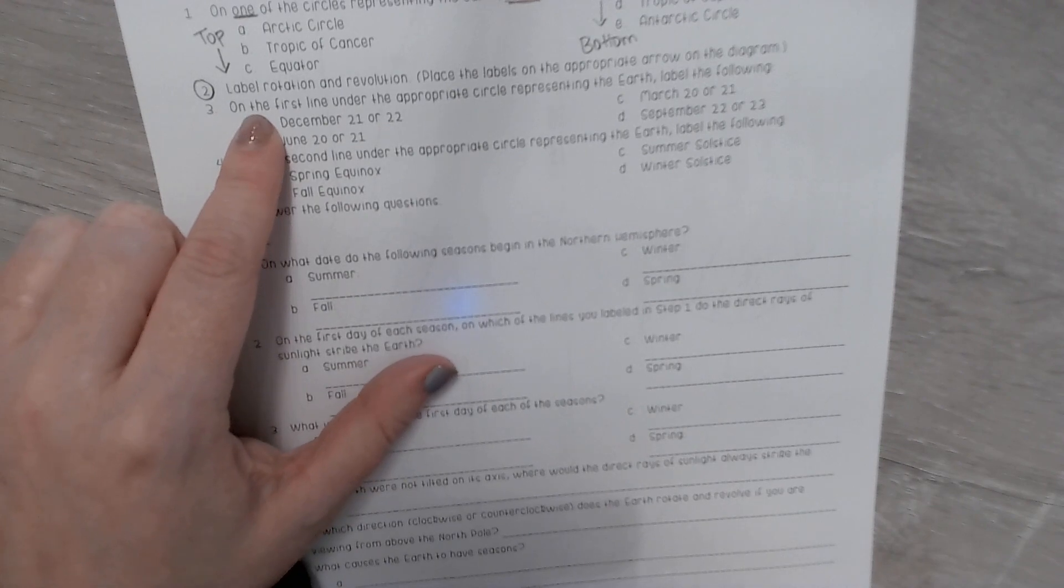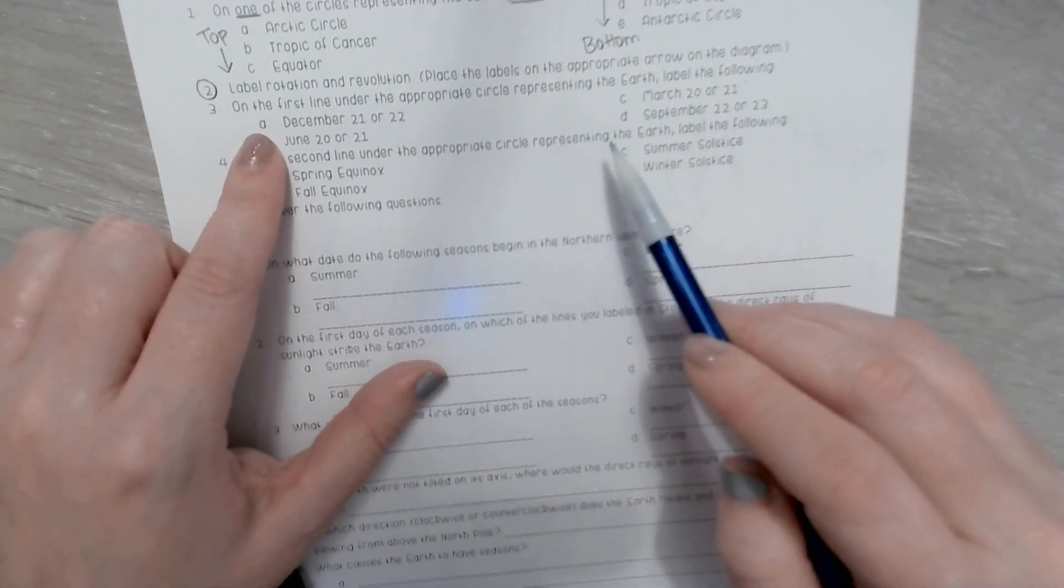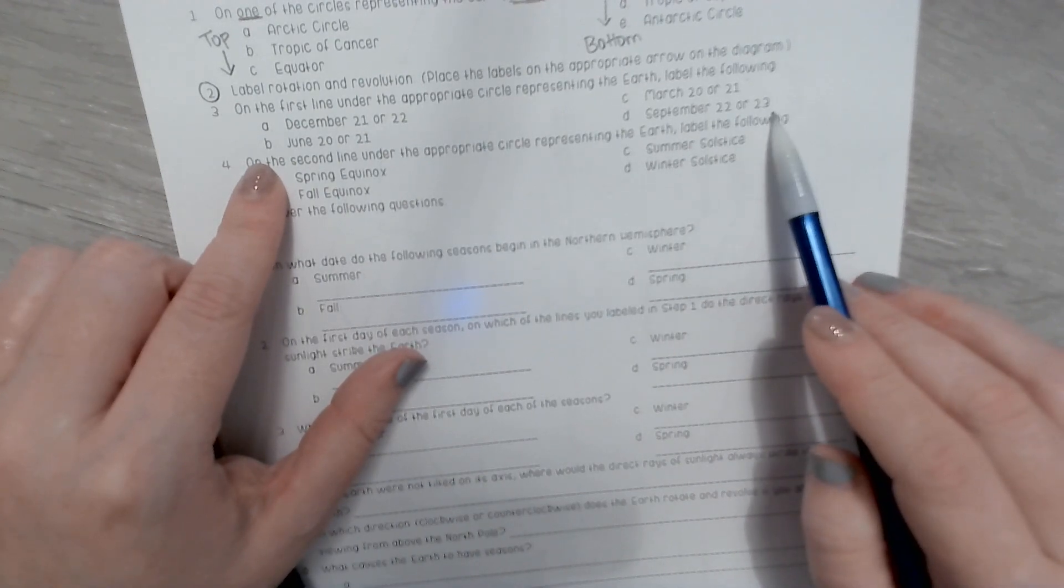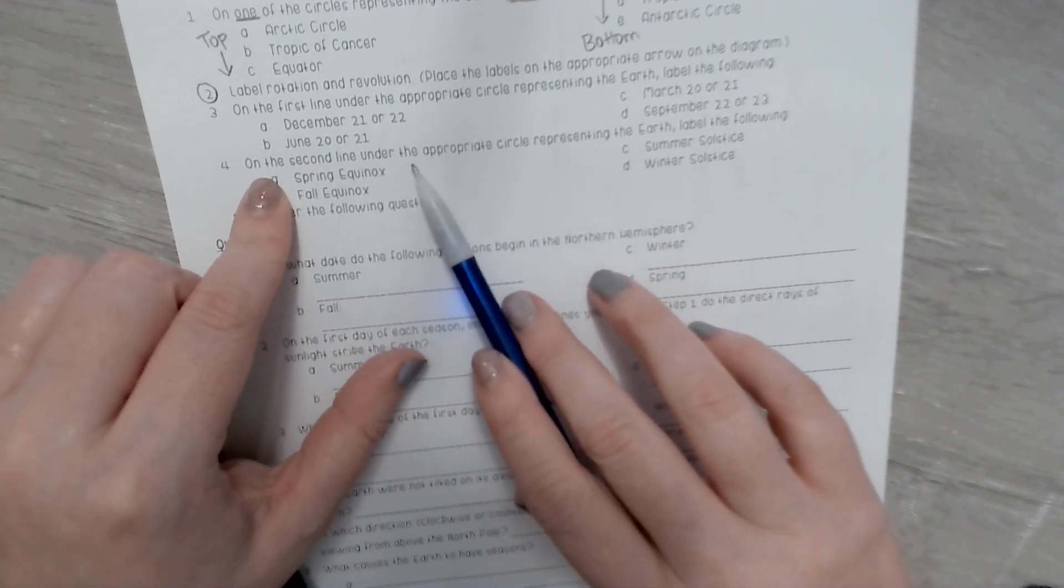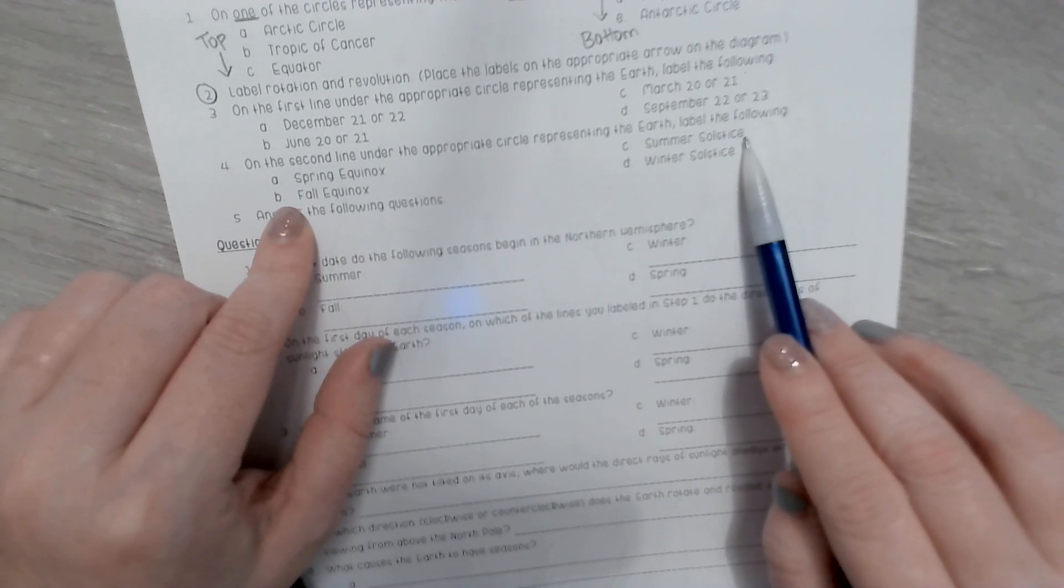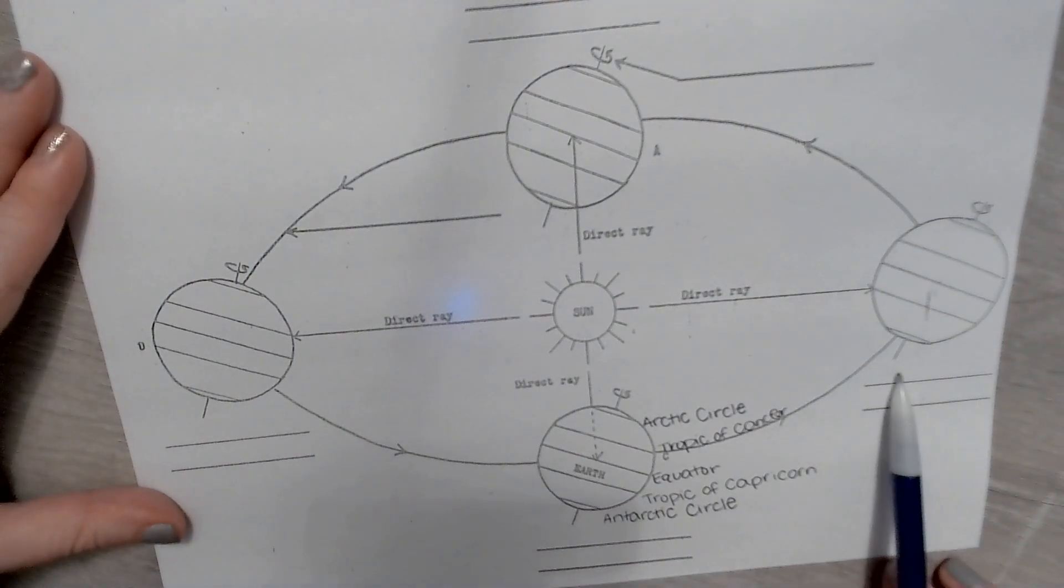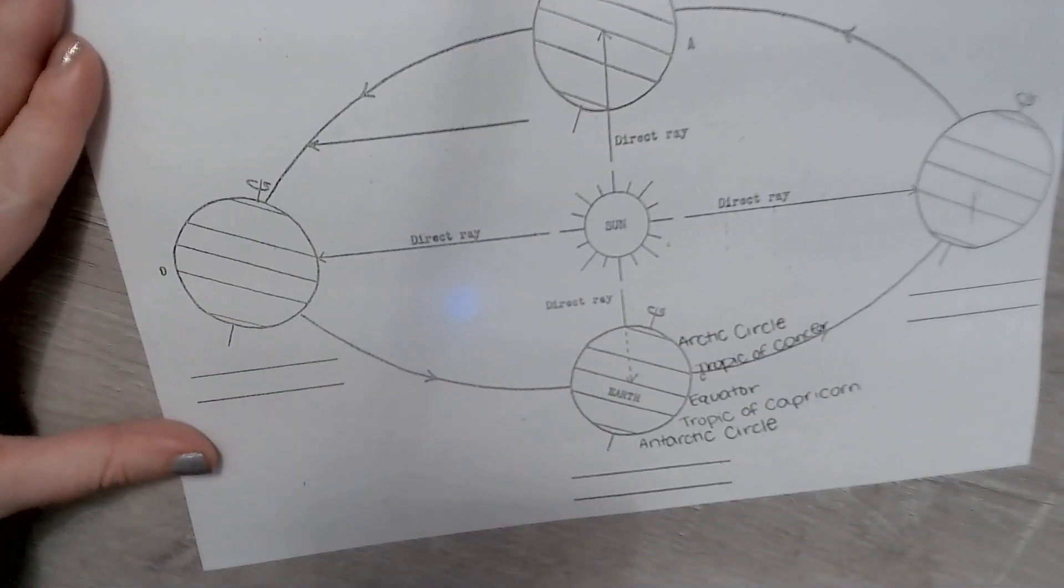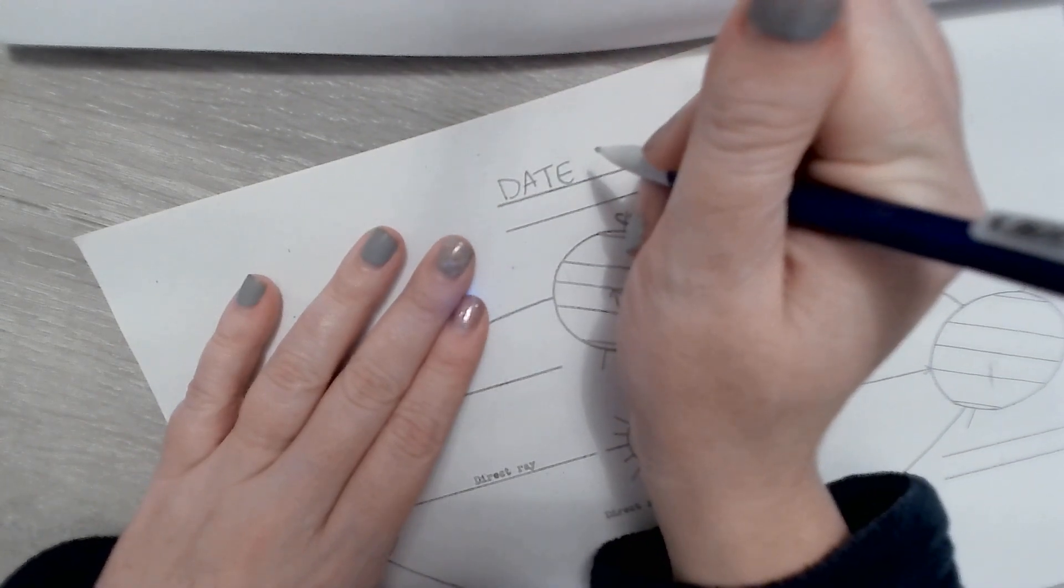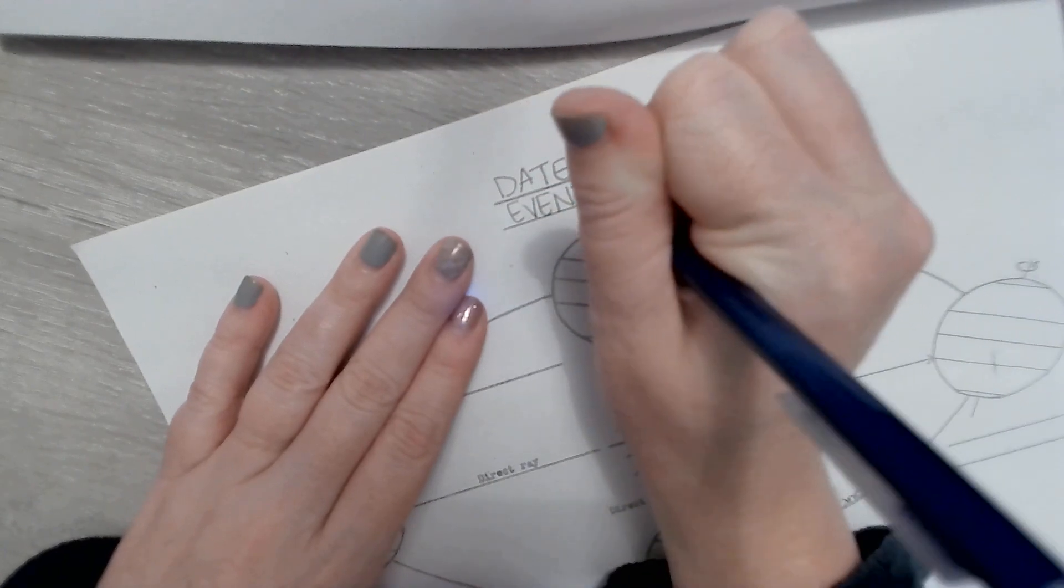On the first line under the appropriate circle representing the Earth, label the following: December 21st or 22nd, June 20th or 21st, March 20th or 21st, and September 22nd or 23rd. And then on the second line you are going to label the appropriate event, whether it is the spring equinox, the fall equinox, the summer solstice, or the winter solstice. On each of these four circles you have two lines either above or below. You are going to put the actual date. This is just an example, by the way. The date goes on the top line and the event goes on the bottom line.